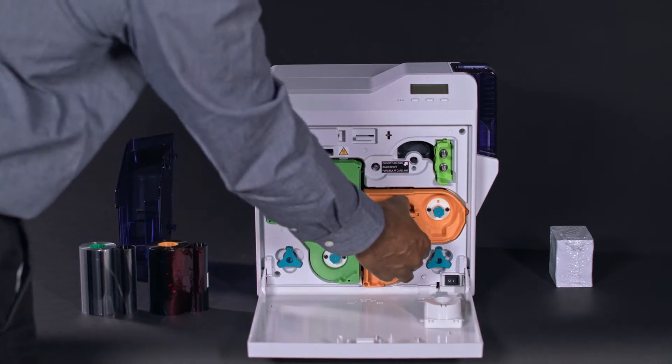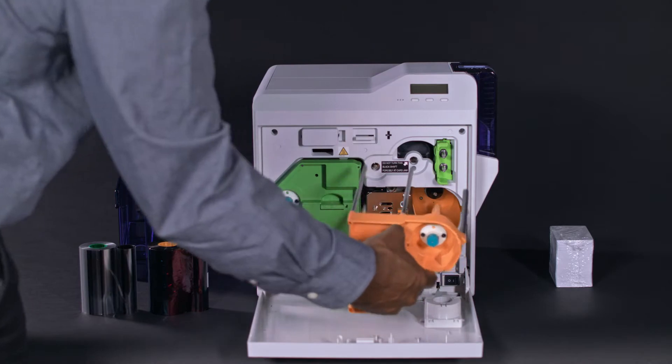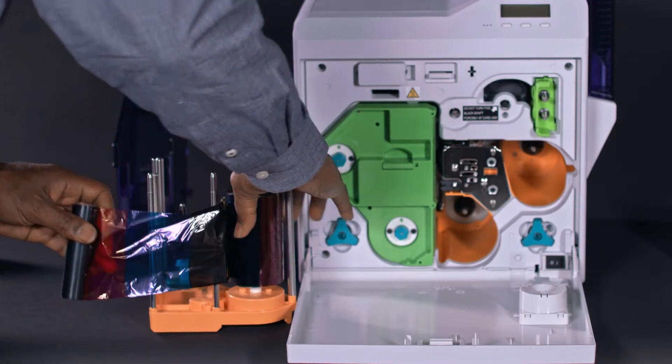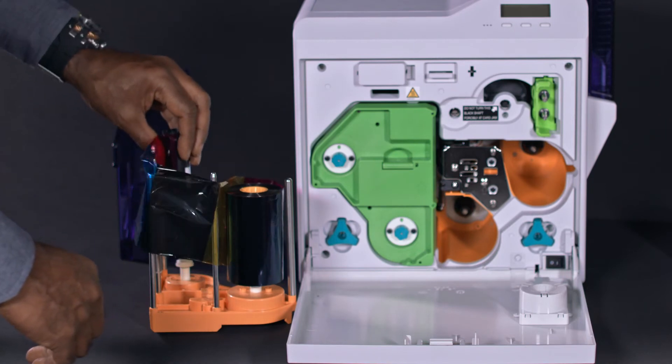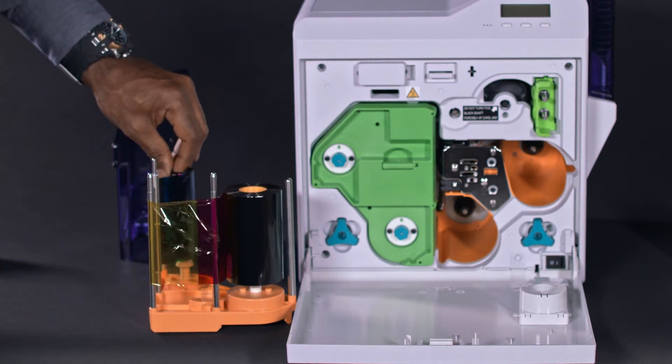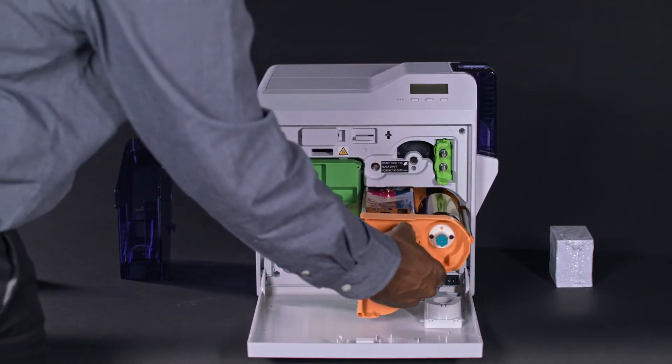Inside the ribbon cassette is a picture that displays how the ribbon is fitted to the cassette. Take the supply side and place it on the orange spool. Place the opposite end on the black spool. Wind up the tension. You have successfully installed the ribbon.